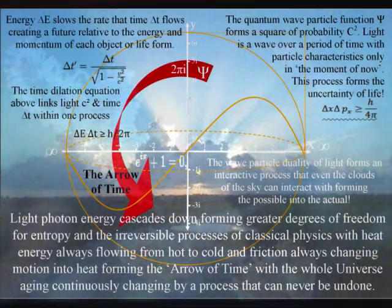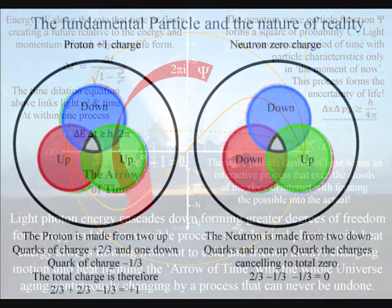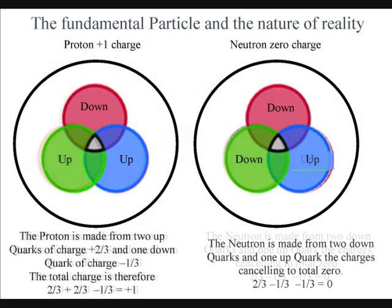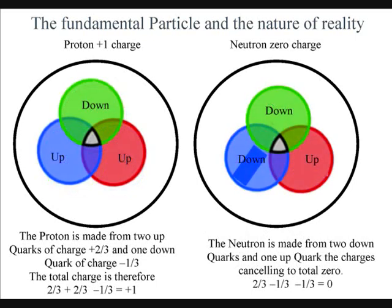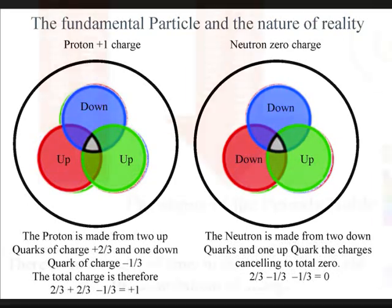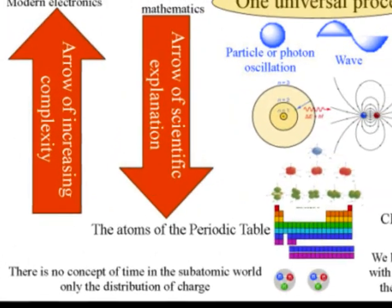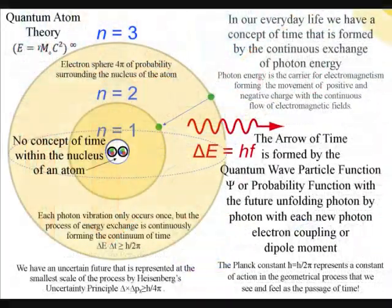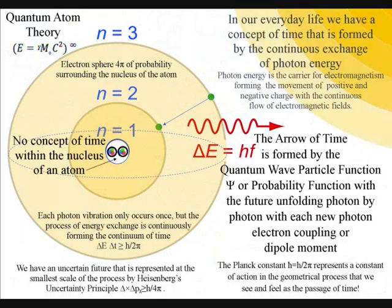There is no concept of time at all in the subatomic world within the atoms. All we have is the distribution of charge into three parts, representing three-dimensional space. This is because the continuum of time is formed by light waves interacting with the electron probability cloud that surrounds the atoms.